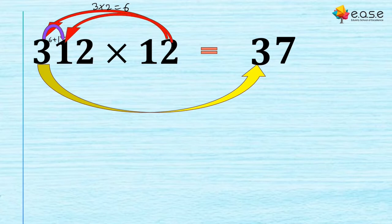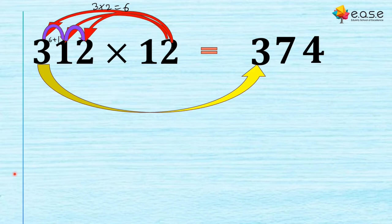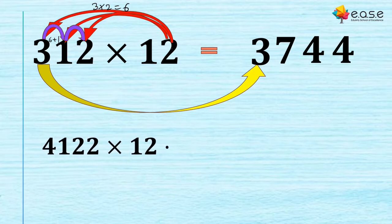Continuing: 1 × 2 = 2, and 2 + 2 = 4. At the end, 2 × 2 = 4, which gives you the last digit. So the final answer is 3744.